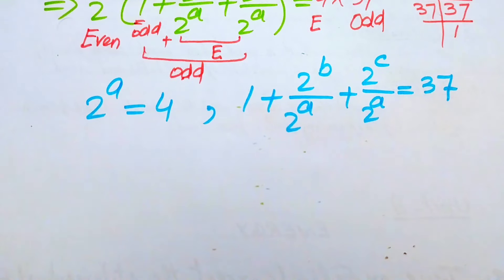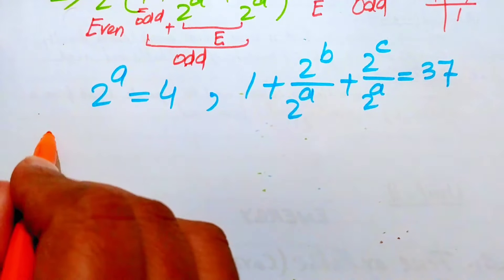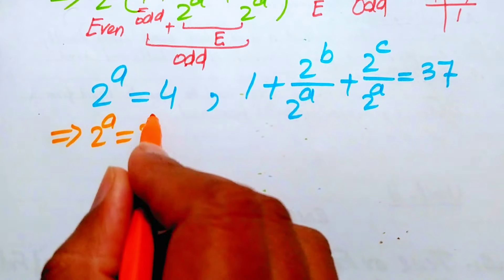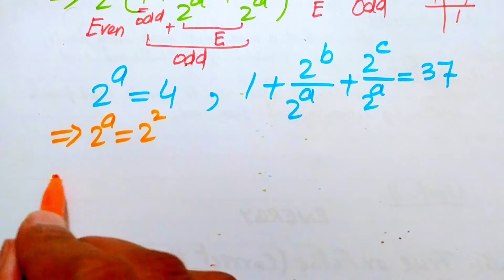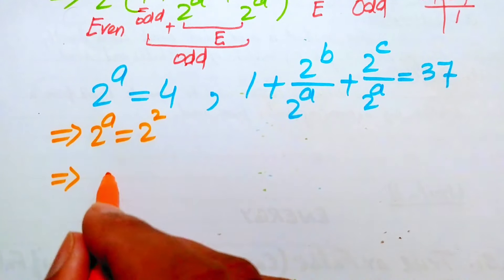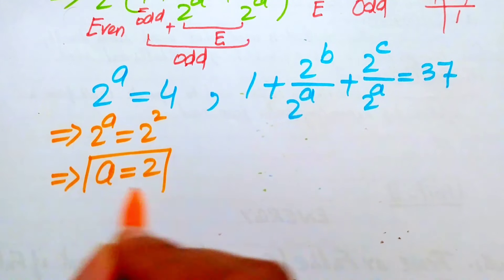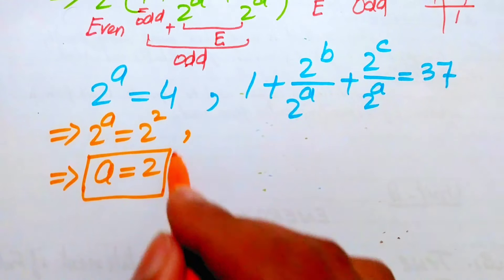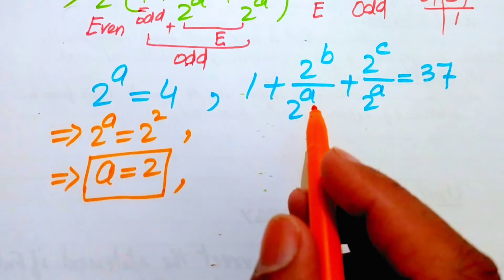Now we can simplify. We write the right-hand side as 2 to the power of 2, and since the bases are the same we equate exponents. After equating exponents we get the value of a equals 2.